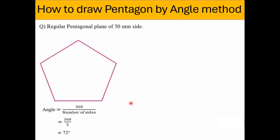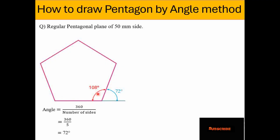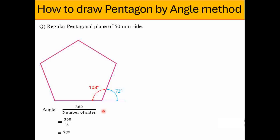That 72 degree angle will be from the outside of the pentagonal plane at one of the corner points. In this case, we are considering the first side we are going to draw. From the corner point of this horizontal edge, the outer angle is 72 degrees. The inner angle of the pentagon at that same corner point with that edge is 108 degrees. So either we can use 72 degrees from the outside or 108 degrees from the inner side. This is the base of this procedure.